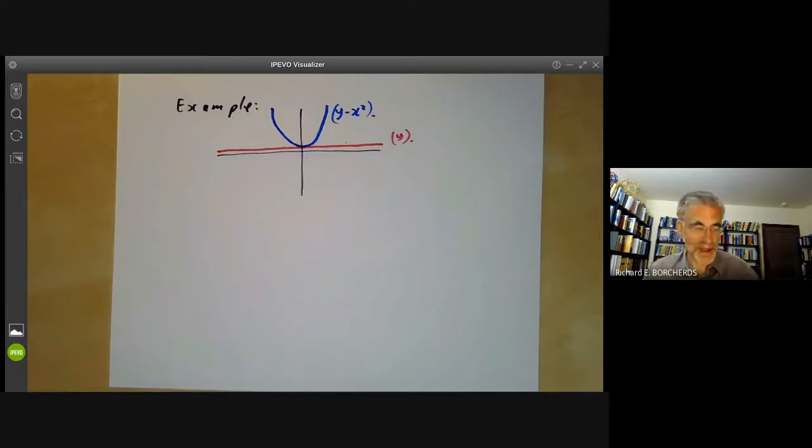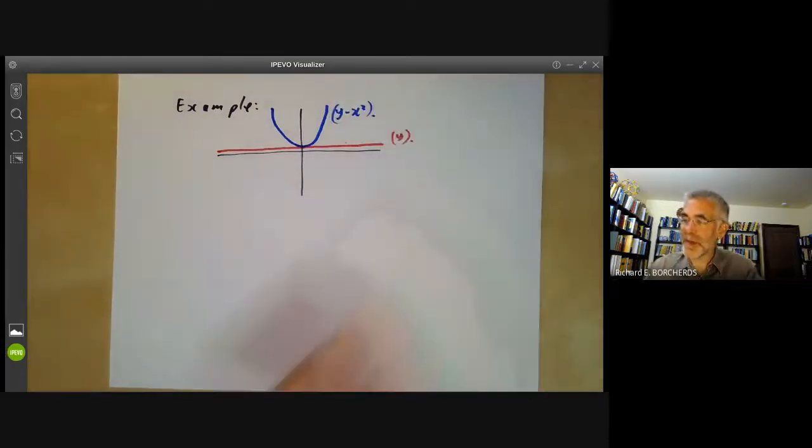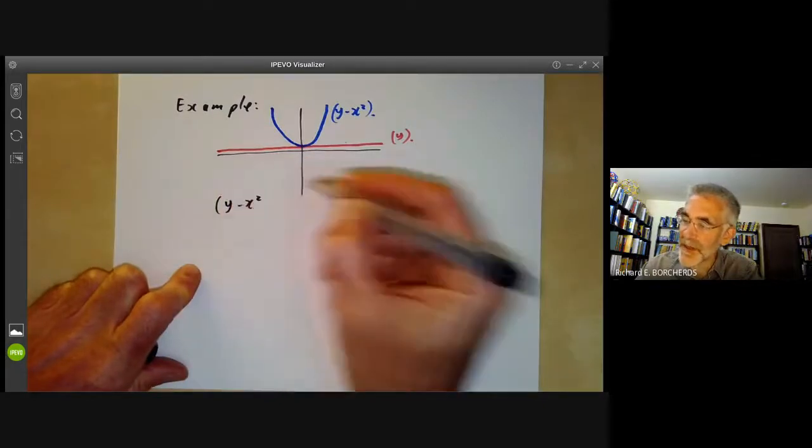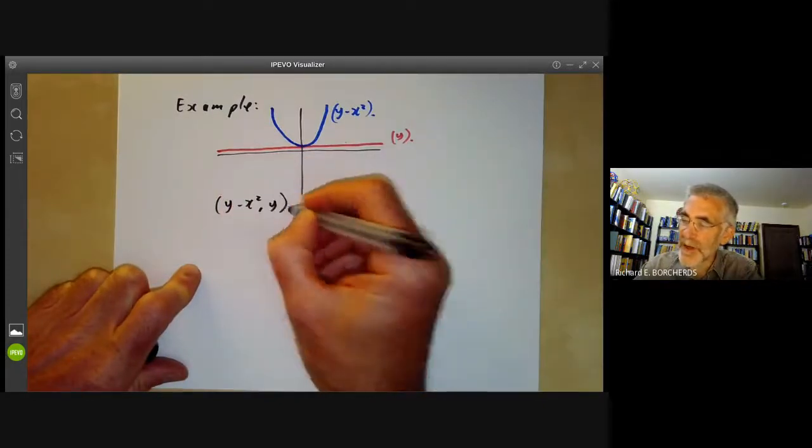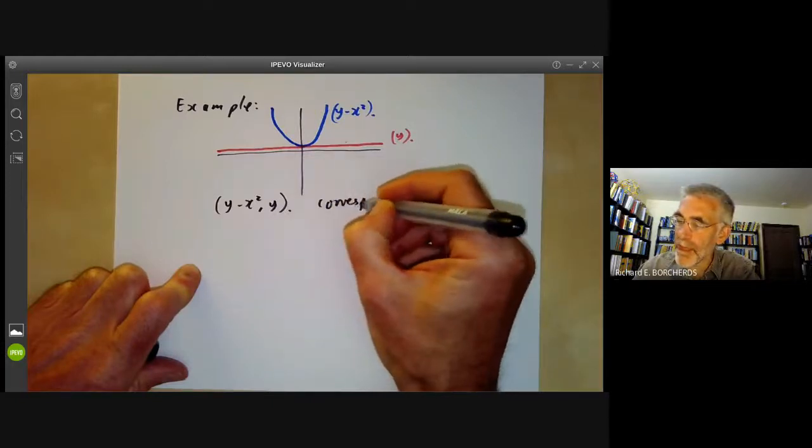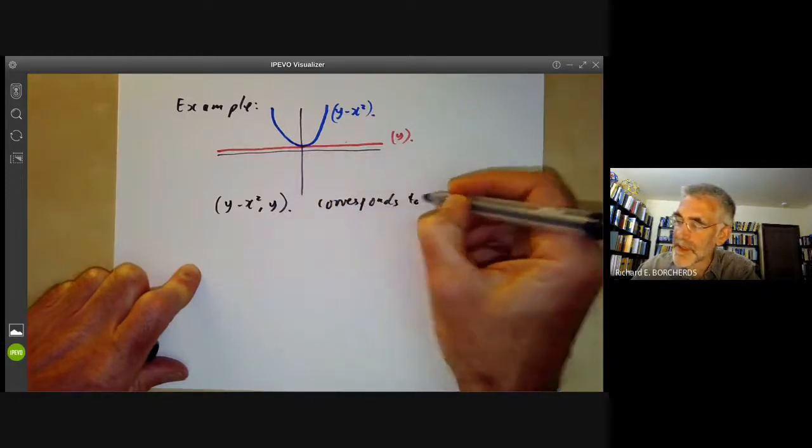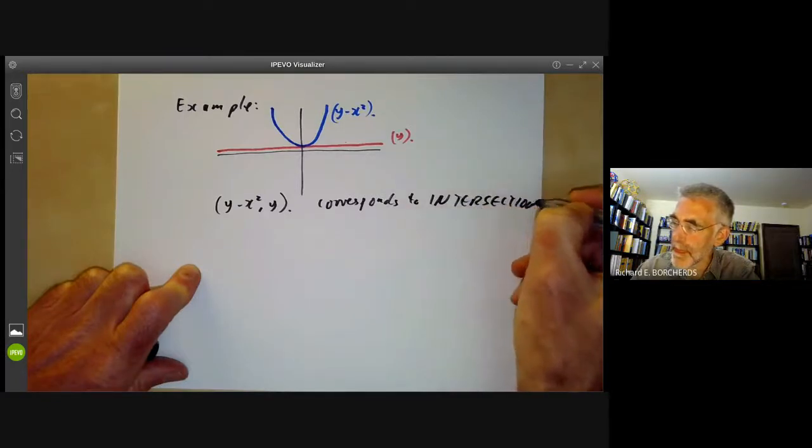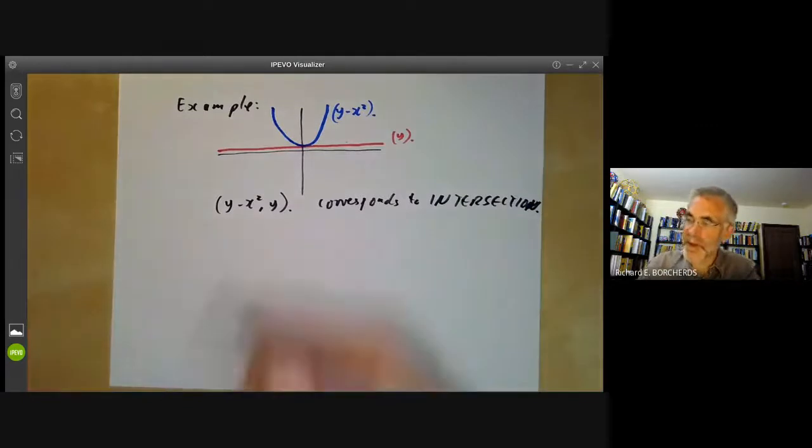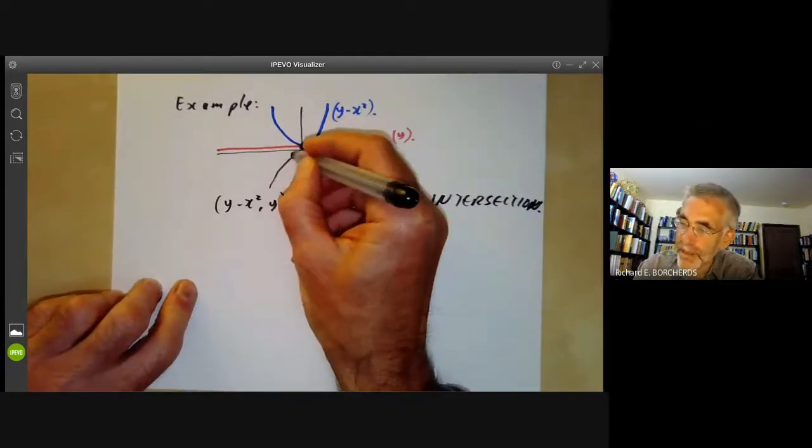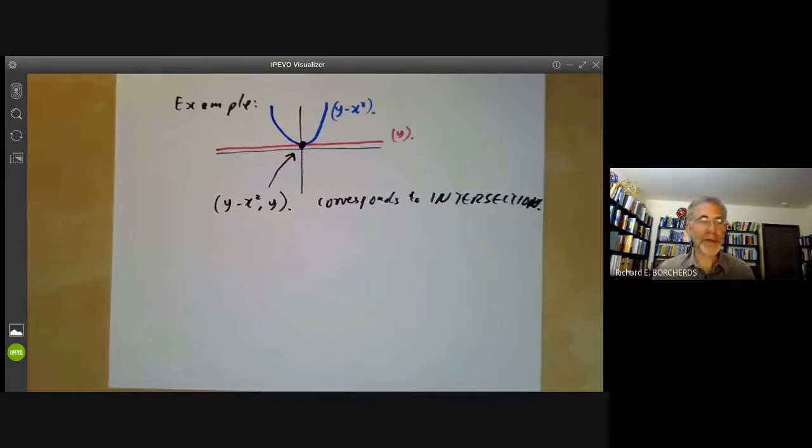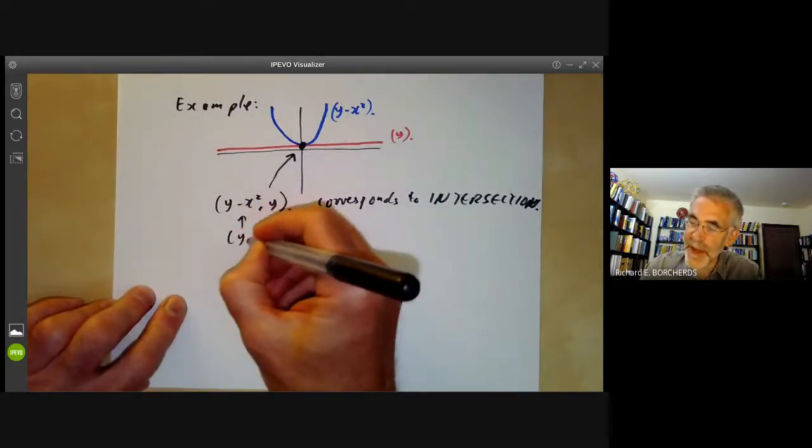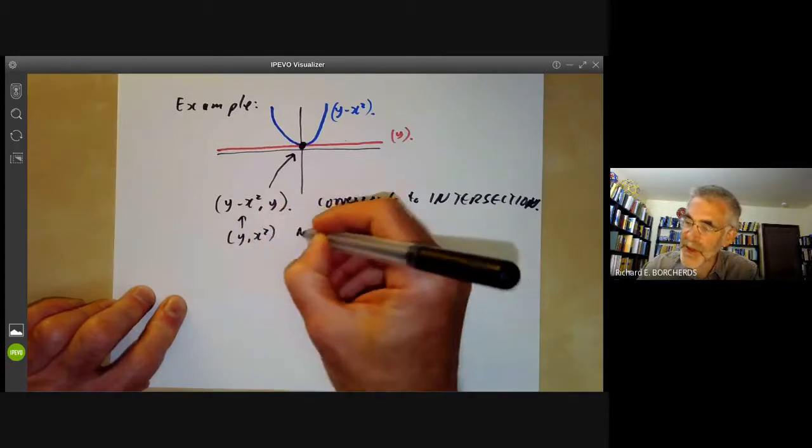And now let's look at the intersection of these two varieties. Well, you can try forming the intersection by taking the ideal generated by these two ideals. So we take the ideal (y - x^2, y). So this corresponds to the intersection. So it corresponds at this point here. However, there's a bit of a problem because this is not radical. So it's the ideal (y, x^2) and is not a radical ideal.